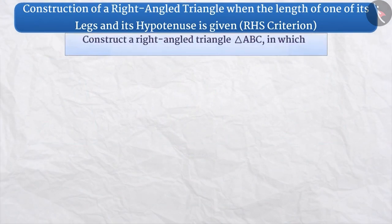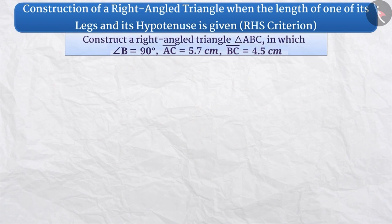Suppose, we have to construct a right-angled triangle ABC. In ABC, the measure of angle B is 90 degree, the length of the hypotenuse AC is 5.7 cm and the length of the side BC is 4.5 cm.